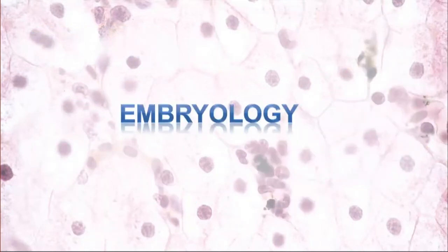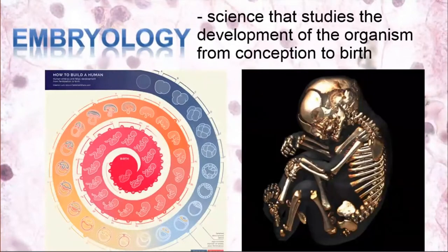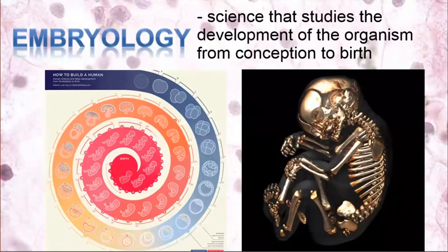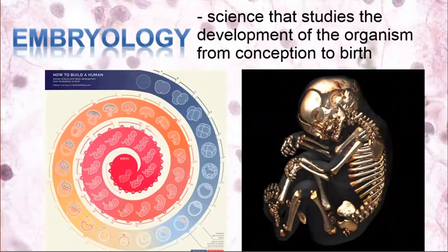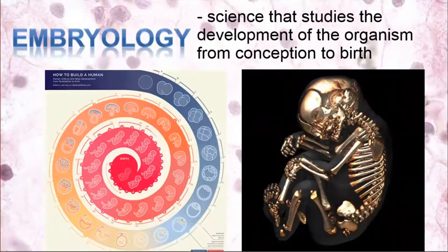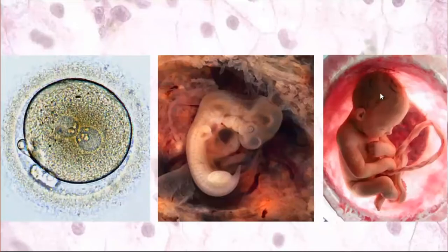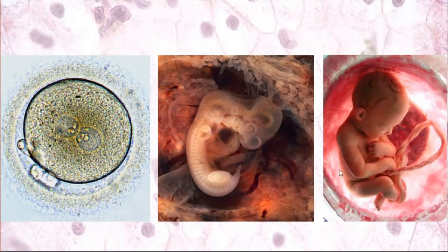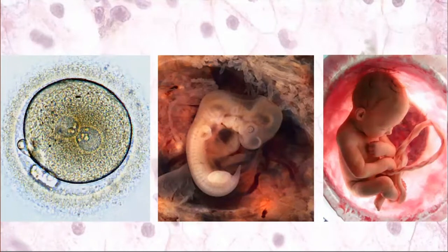Embryology is the second subject. It is the science that studies the development of the organism from conception — from fertilization to birth. We will study general Embryology, which studies the development of the entire organism, and also special Embryology, which studies the development of different organs and tissues. Here we can see three principal stages showing different stages of development of the human embryo beginning from a unicellular organism.